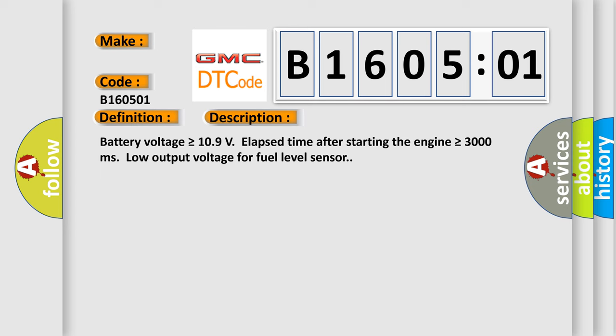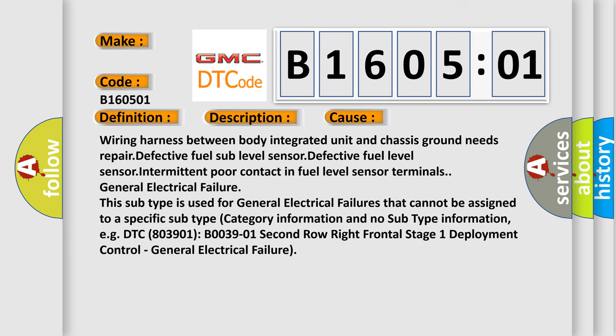This diagnostic error occurs most often in these cases: Wiring harness between body integrated unit and chassis ground needs repair. Defective fuel sub level sensor. Defective fuel level sensor. Intermittent poor contact in fuel level sensor terminals. General electrical failure.